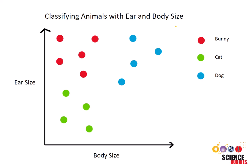The K-Nearest Neighbors algorithm is a very simple way to classify data. You simply start with a dataset with known categories and graph them on a plot. For this imaginary dataset, we have two features — body size and ear size — that will help us classify whether an animal is a bunny, cat, or dog.